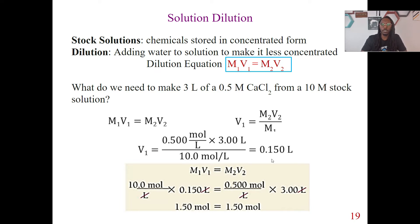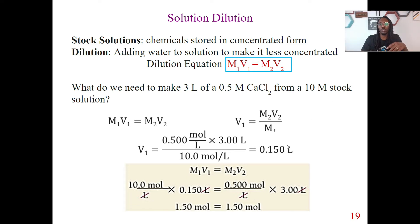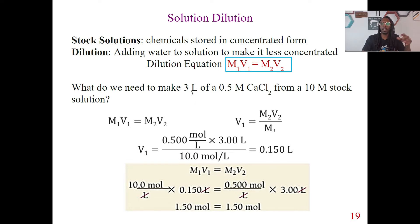So we have 0.15 liters. What does this mean? This means that I need 0.15 liters of a 10 molar stock solution in order to make a 3 liter solution of 0.5 molar calcium chloride concentration. Remember, how are we exactly making this solution? We're taking that 0.15 liters of our concentrated solution and then filling the rest up with water. That's how we're changing the concentration — by filling it up with water we get 0.5 molar. This 0.15 liters is just our stock solution; everything else in the 3 liters will be water.